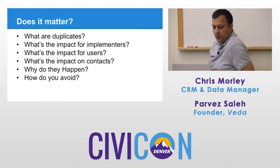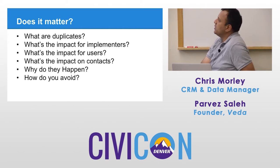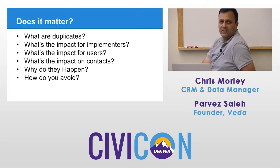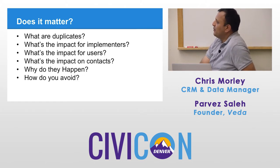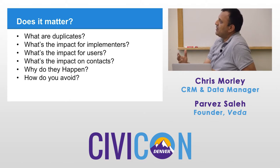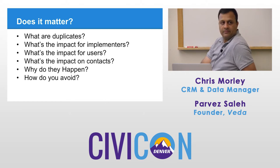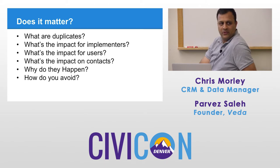Why do duplicates happen? There's front-end interaction with contacts — we want contacts to donate online, we want them to register for events, we want that seamless integration. This is one of the knock-on effects. If you're allowing someone to register for something, you can't stop them and say 'are you sure you're not X?' — that's data protection. You can't say they're not allowed to change their surname because they may have got married. So there's going to be some element of duplication in your database and you have to accept that. What are the other possible avenues for duplicates? Imports — that's one of the biggest.